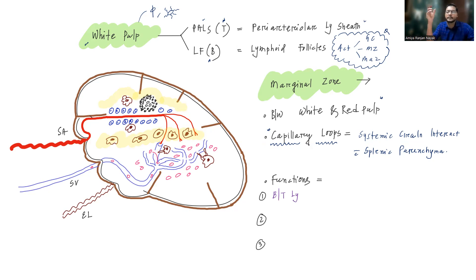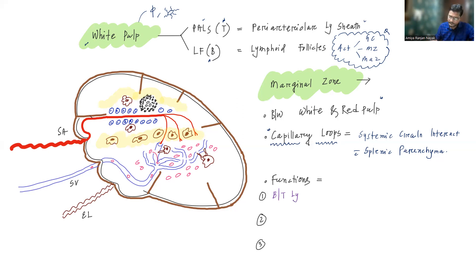This is the same concept as for lymph nodes — lymphocytes enter the lymph node at the paracortex through high endothelial venules. Similarly, for spleen, B and T lymphocytes enter the splenic parenchyma at the level of the marginal zone. Stromal cells in the marginal zone produce chemokines that attract B and T lymphocytes. Apart from this, the marginal zone has plenty of macrophages whose major function is antigen presentation to T lymphocytes.